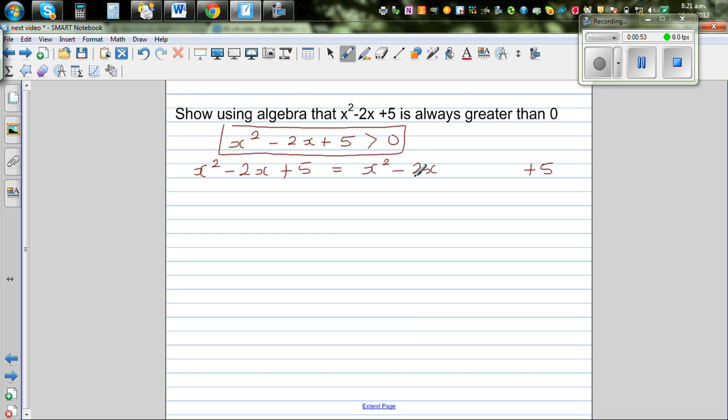Now to complete square what we do is you do the half of negative 2, which is negative 1, and then square it. So if you add 1 here this will become a perfect square, and then immediately you take away 1.